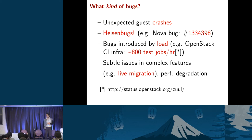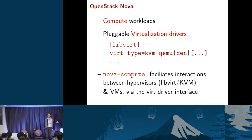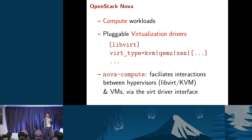Nova runs your compute workloads and schedules Nova instances, interacting with underlying virtualization drivers — KVM, QEMU, Xen, Parallels, VMware, and many others. The virtualization type that's supported can be specified with the virt_type configuration in Nova's configuration file.